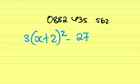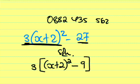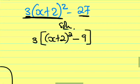For this problem, we can take out the common factor, which is 3. Factoring out 3: 3[(x+2)² - 9].